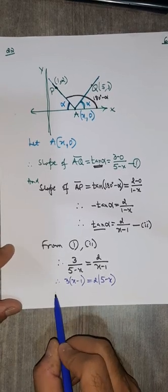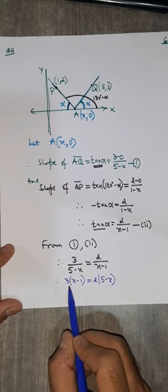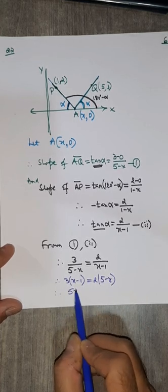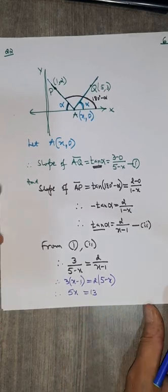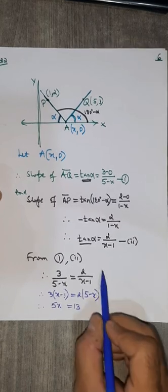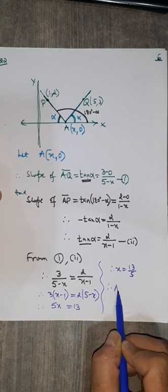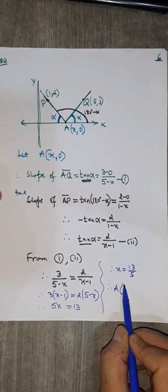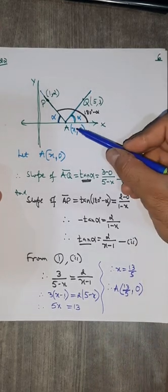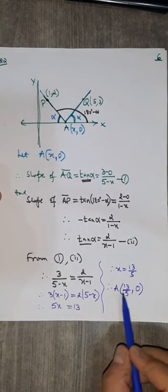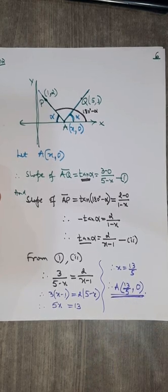Simplifying: 3x minus 3 equals 10 minus 2x, so 5x equals 13, therefore x equals 13/5. The coordinates of A are (13/5, 0).